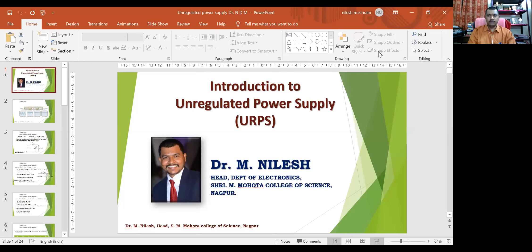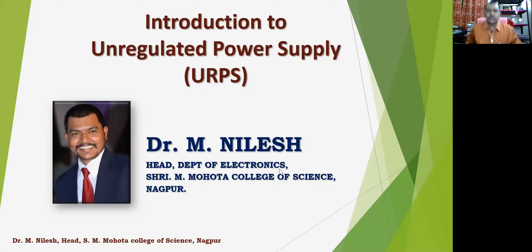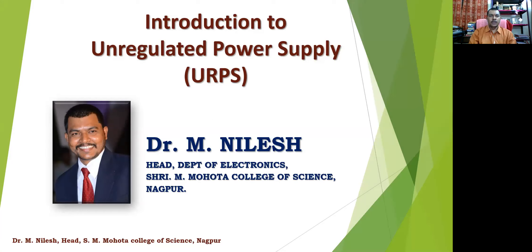Good afternoon friends. We started with transistor as a switch in the last class, working on unregulated power supplies and the role of transistors in them. But before that, we will start with a small device called the Zener diode, which is used in reverse bias and is a most important component of regulated power supplies. That is where we will be starting today.